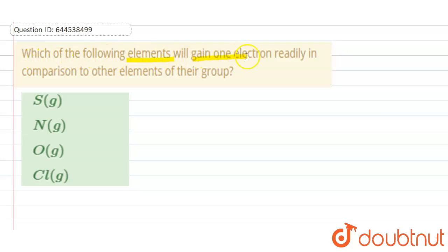Which of the following elements will gain one electron readily in comparison to the other elements of their group? Here they are talking about electron affinity, electron gain. What electron gain means is electron affinity.